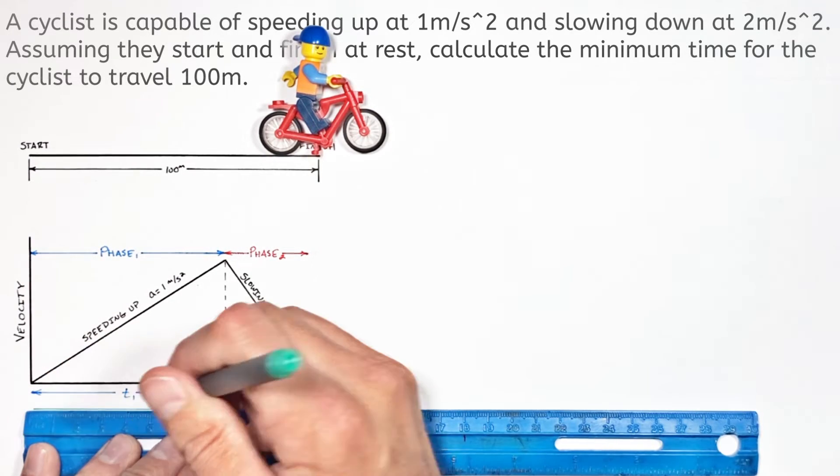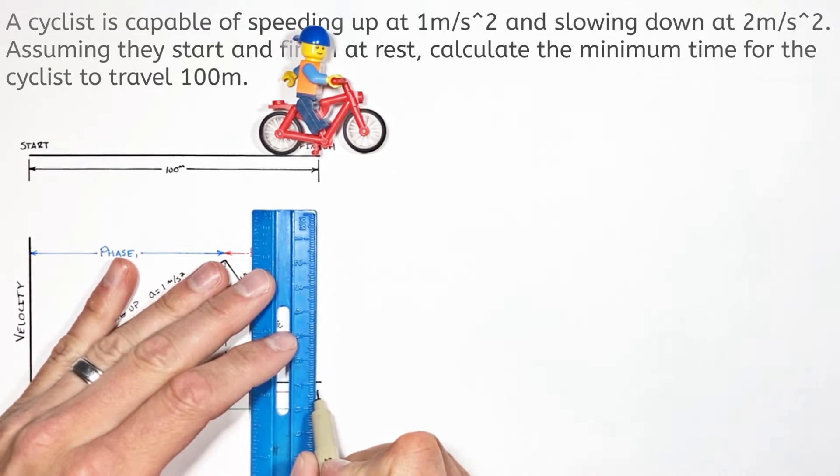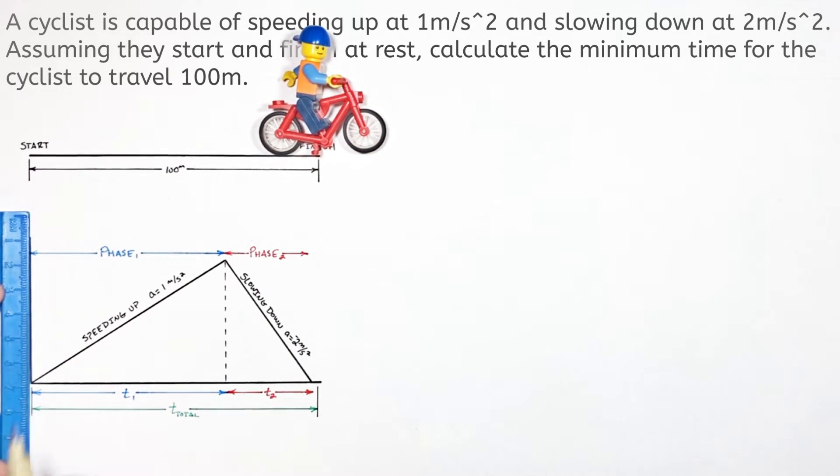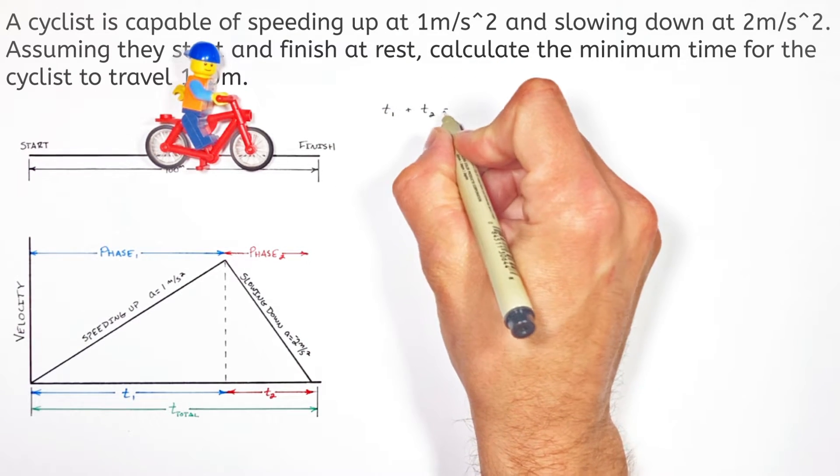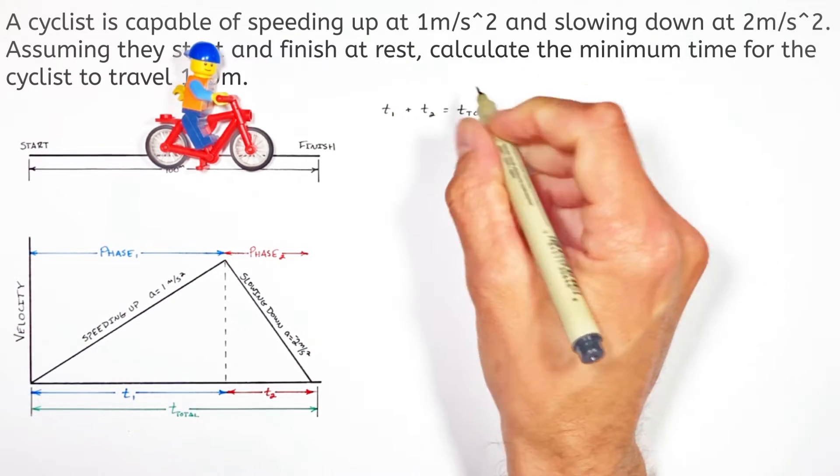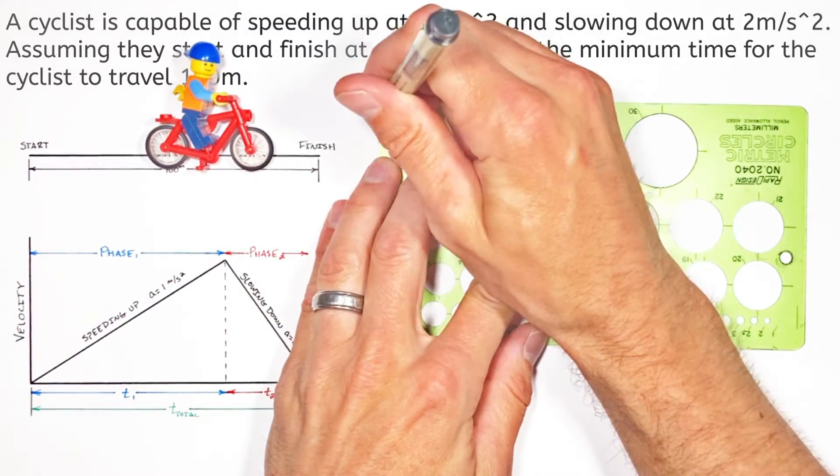And it makes sense to call that second phase a total time of t2. Now from looking at the graph we can see the total time our little dude spends riding is going to be the time for phase 1 plus the time for phase 2. Which leads us to our first equation, t1 plus t2 equals the total time. And we'll call that equation 1 in our little system of equations that we're going to generate.